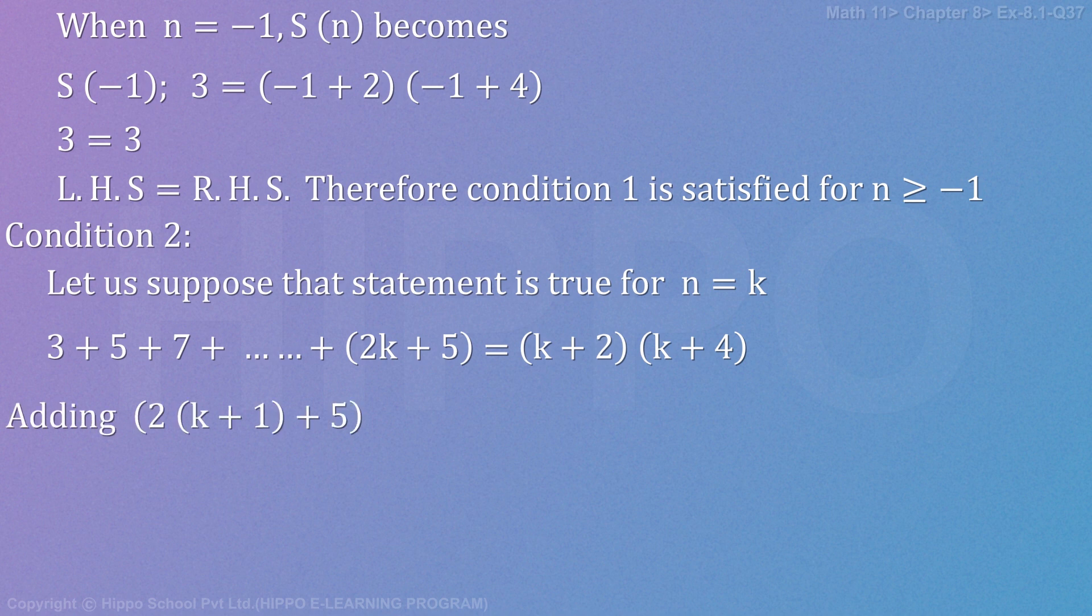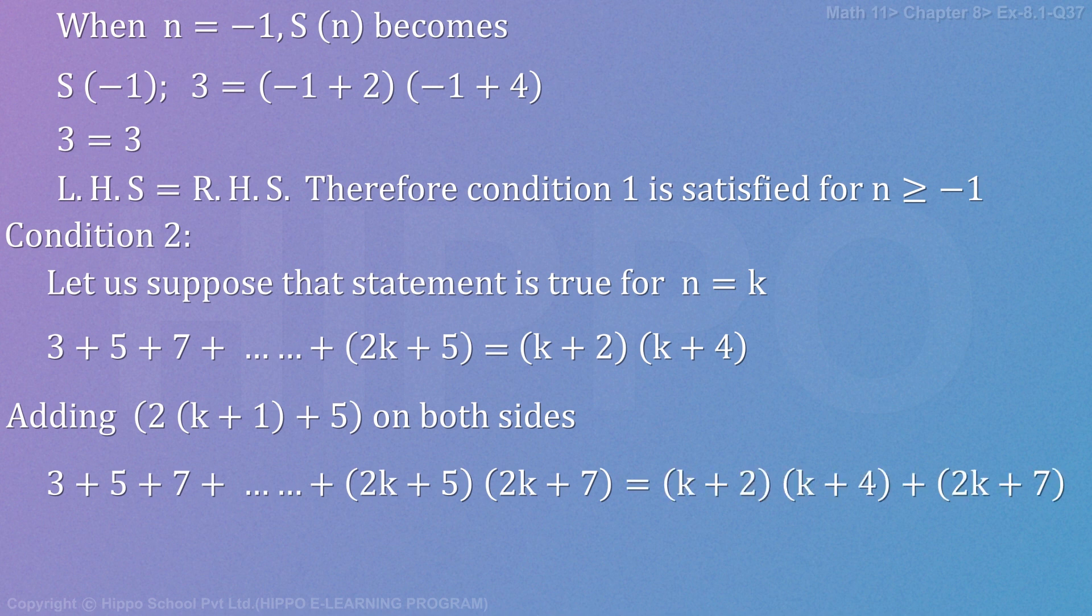Adding 2 bracket k plus 1 plus 5 on both sides, so 3 plus 5 plus 7 plus so on plus 2k plus 5 plus 2k plus 7 equals to k plus 2 times k plus 4 plus 2k plus 7.